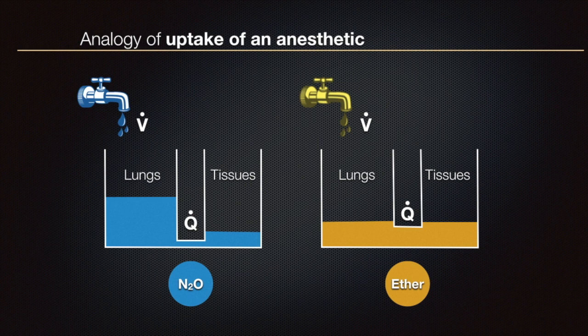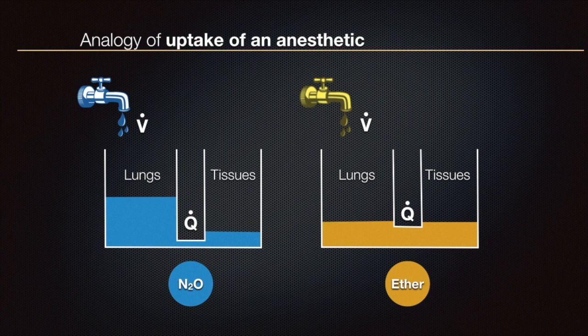Remember: for nitrous oxide the blood-gas partition coefficient is 0.47, as against 12 in the case of ether. In the case of nitrous oxide, the anesthetic agent is carried away only relatively slowly by cardiac output because its solubility coefficient is only 0.47. The high solubility of ether in the blood means it can be carried away from the lungs very rapidly — indicated by the very wide pipe — and hence the alveolar concentration of ether is only slightly above the tissue concentration.